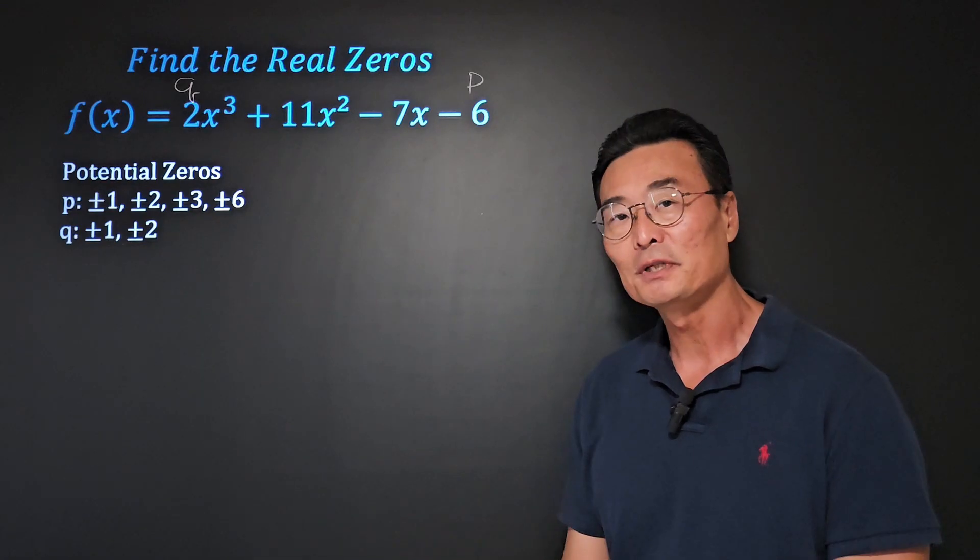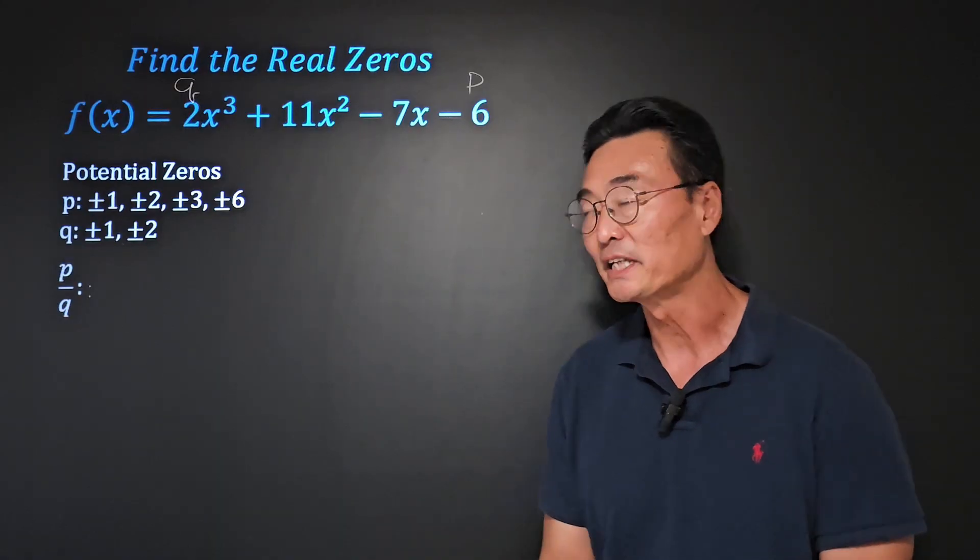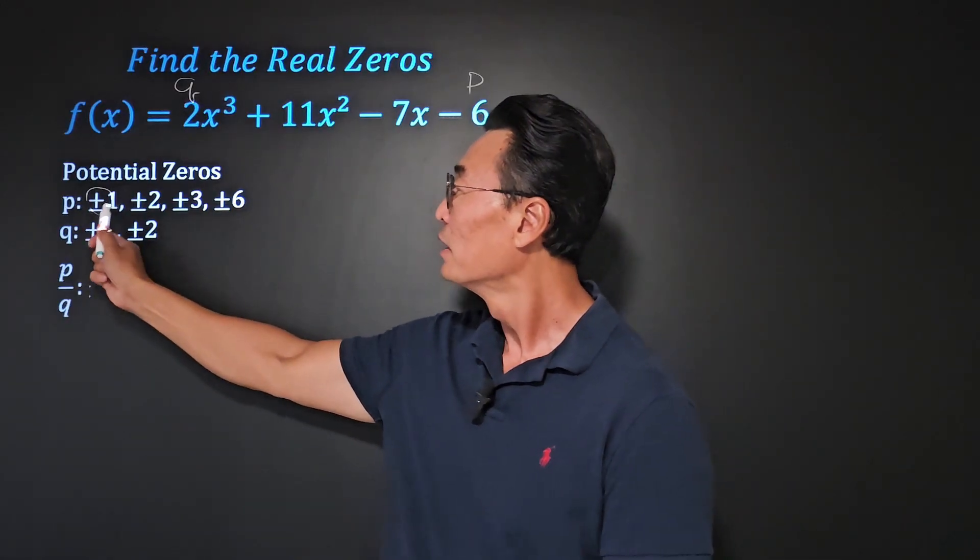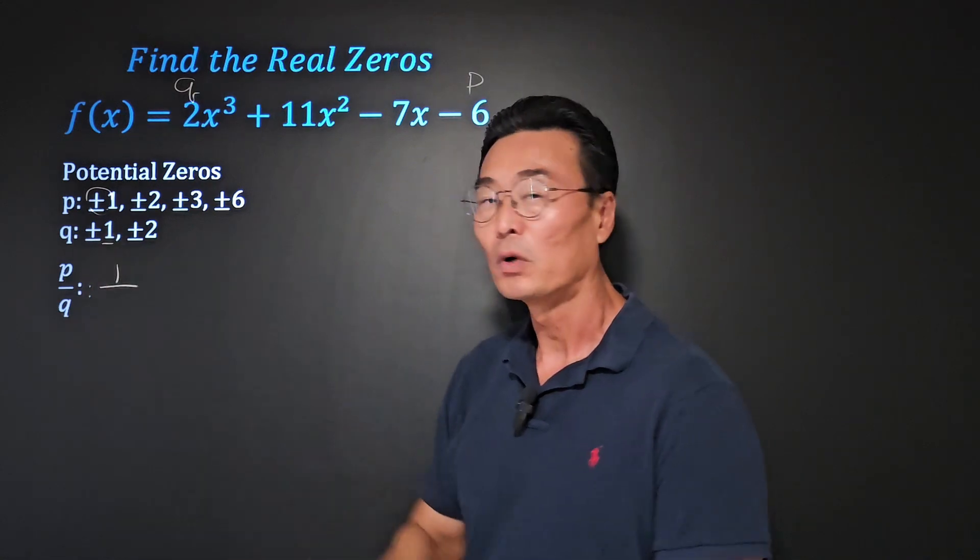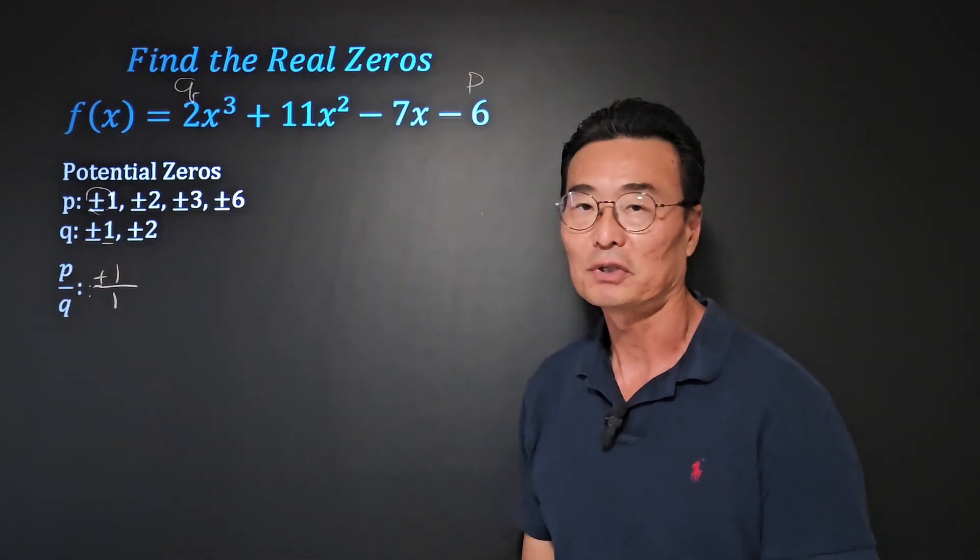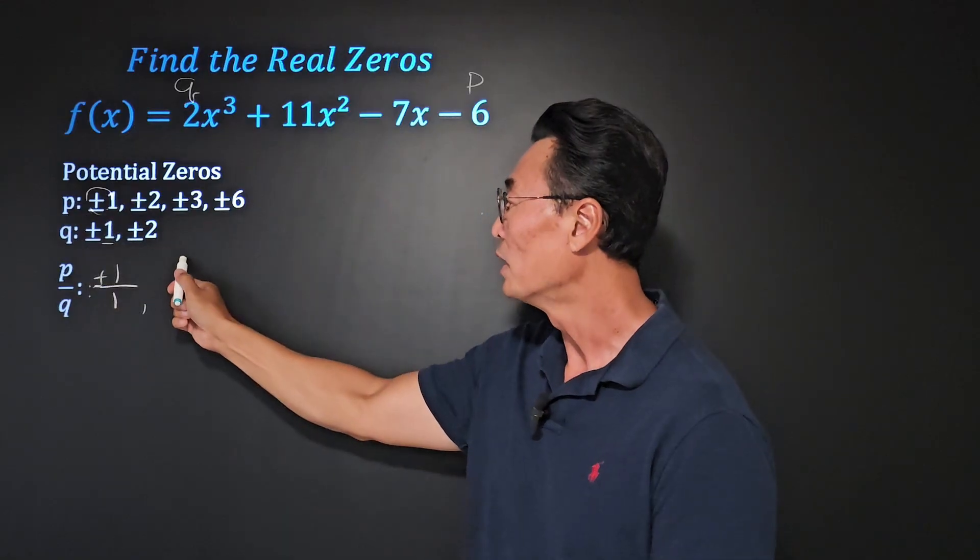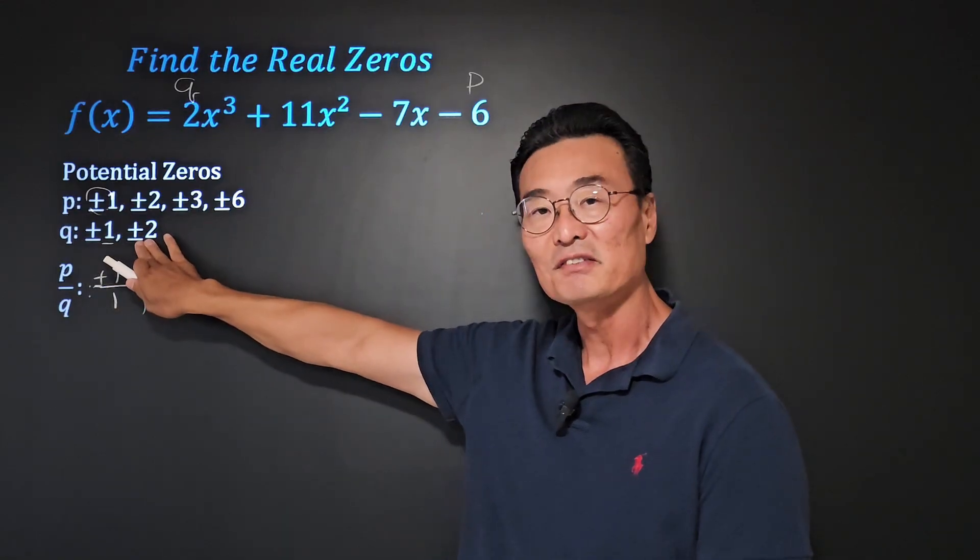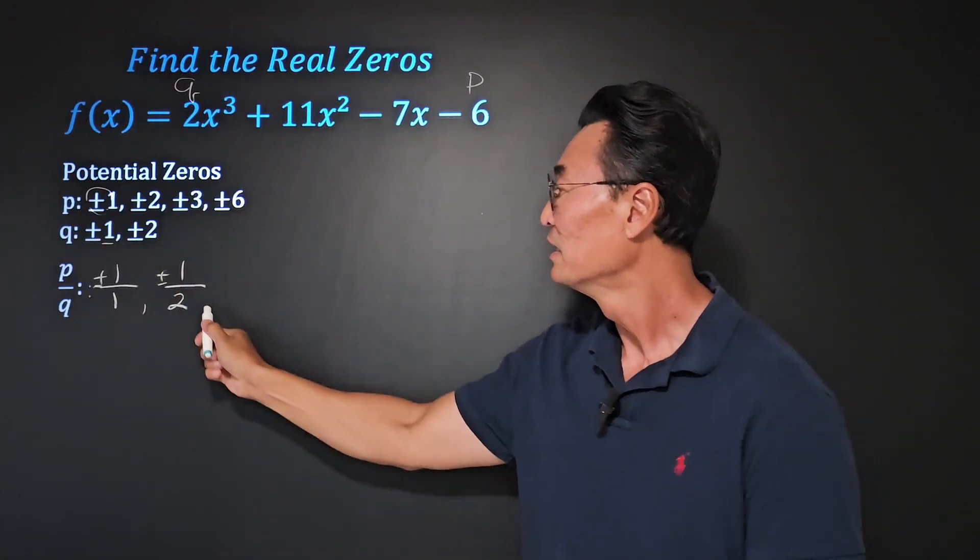Once we have the p's and the q's, what we want to do is list all the combinations of p over q possible. Let's begin. Let's start with the 1, so it's going to be 1 over the 1 here for the q, so it's going to be 1. Again, don't forget the plus minus. Next, while keeping the p as 1, we're going to list 2 for the q, plus minus.